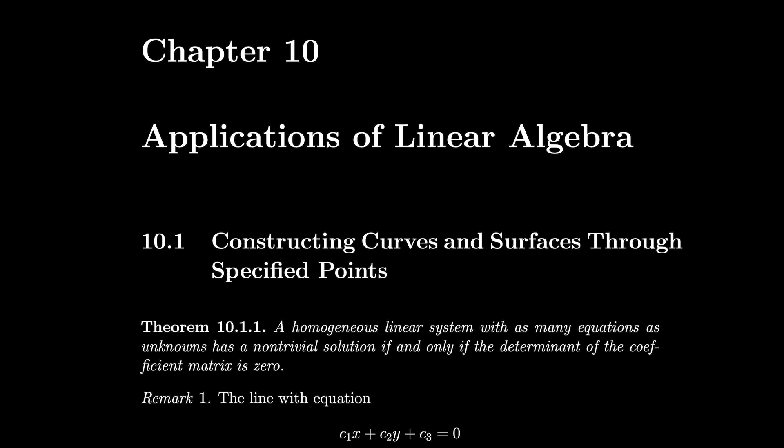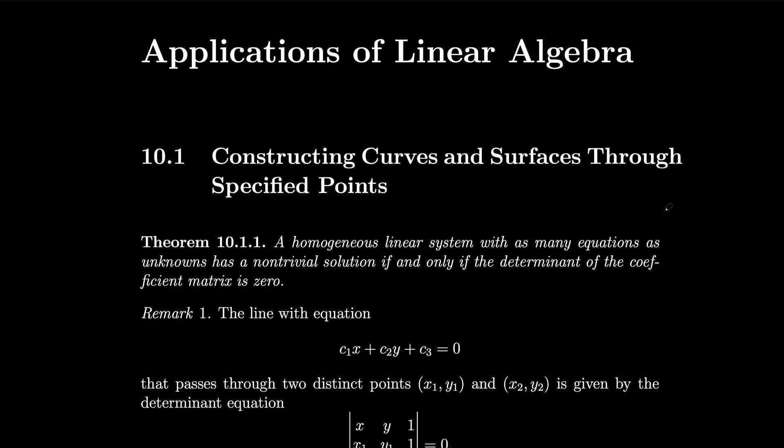Chapter 10, Applications of Linear Algebra, Section 10.1, Constructing Curves and Surfaces Through Specified Points. A homogeneous linear system with as many equations as unknowns has a non-trivial solution if and only if the determinant of the coefficient matrix is 0. Let's take advantage of this theorem to find some equations through different curves and surfaces. So first we'll start with the line.